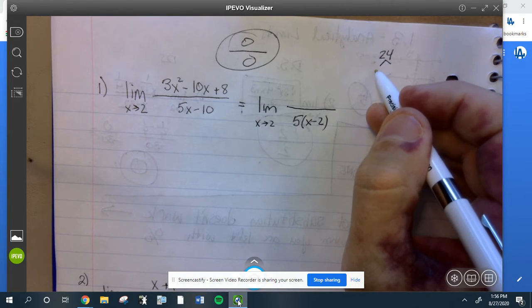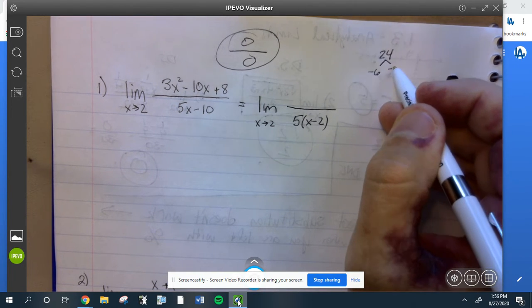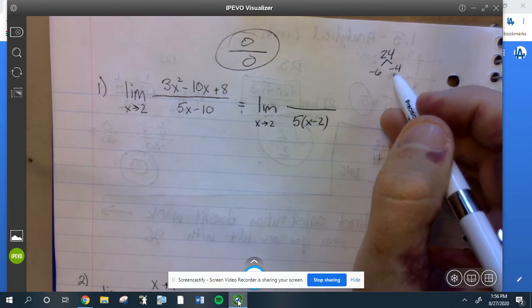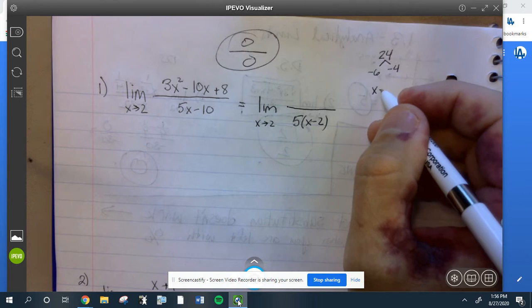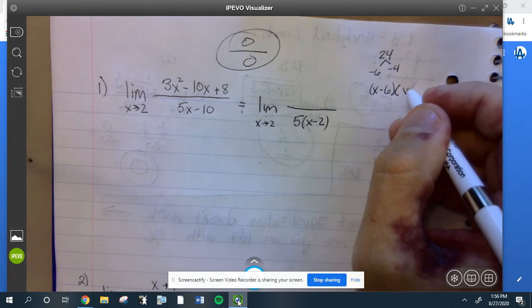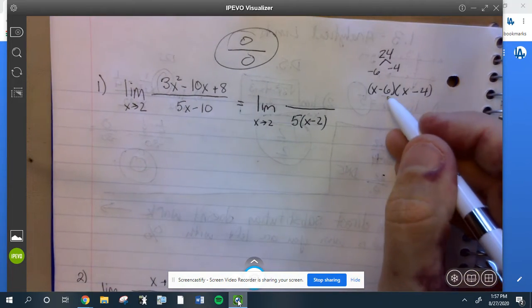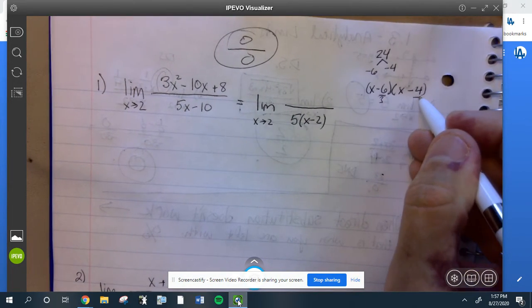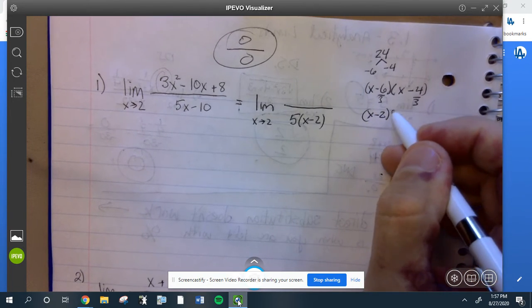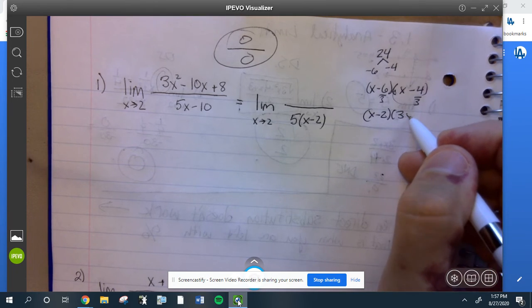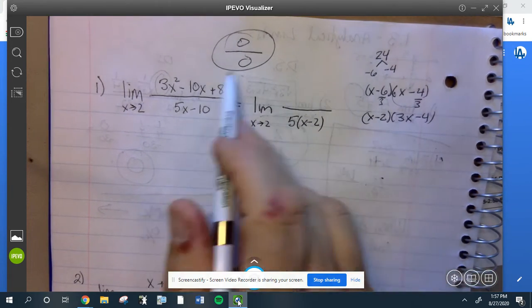Factors of 24 that add up to the middle number negative 10 are negative 6 and negative 4. So here we do, now what factors we found them. So x minus 6, x minus 4, but this number is not a 1, it's a 3, so over 3, over 3. That would mean x minus 2 times bring this 3 up here in front of the x, 3x minus 4.